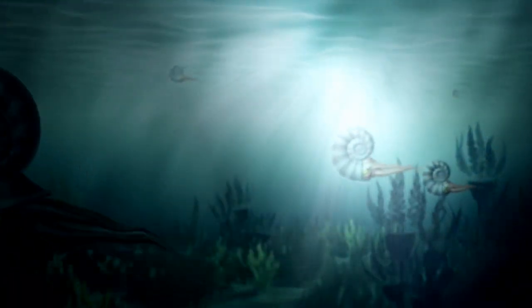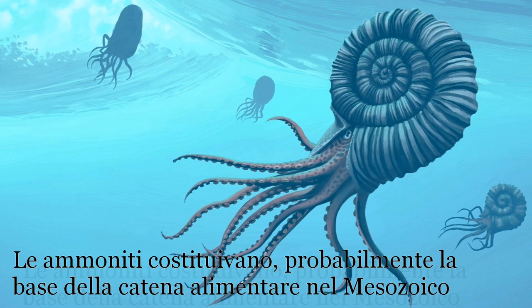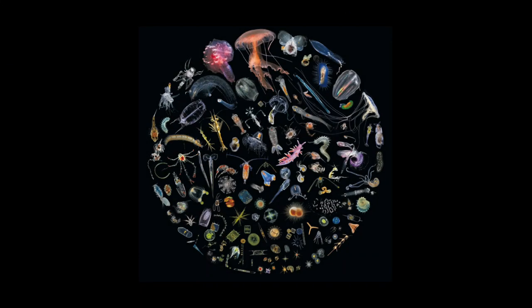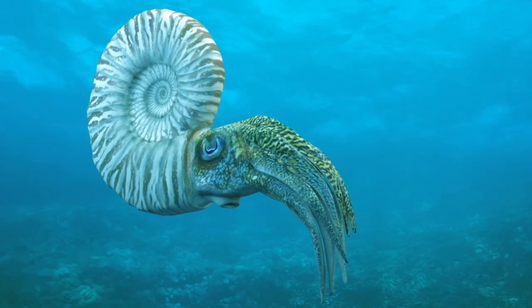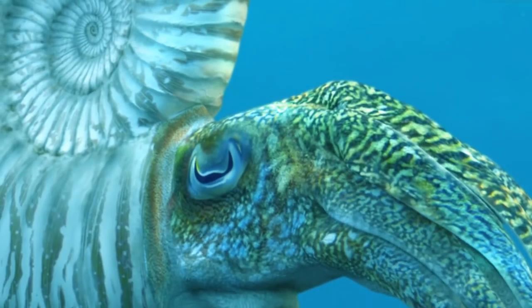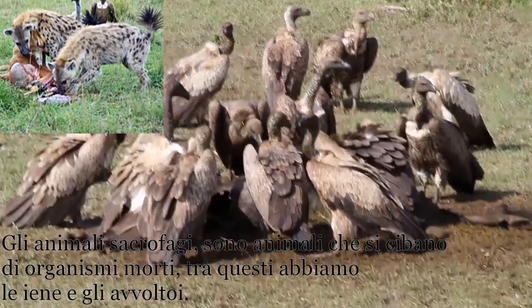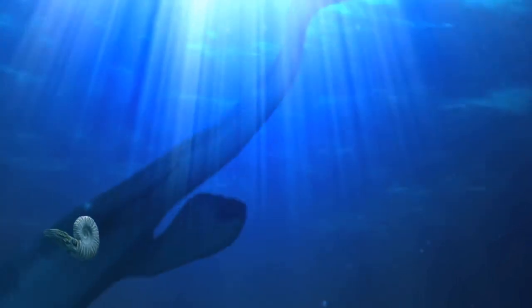Il guscio delle ammoniti era estremamente resistente e difficilmente poteva essere rotto mentre l'animale era in vita. Le ammoniti costituivano però la base della catena alimentare nel Mesozoico: esse si nutrivano di particelle o organismi planctonici che raccoglievano con i tentacoli, poiché la loro testa costituiva il piede dell'animale. In alcuni casi potevano anche essere saprofaghe. Erano però anche la preda di altri animali, come gli ittiosauri, i plesiosauri, i mosasauri o i talattosuchi, cioè i coccodrilli marini del Mesozoico.